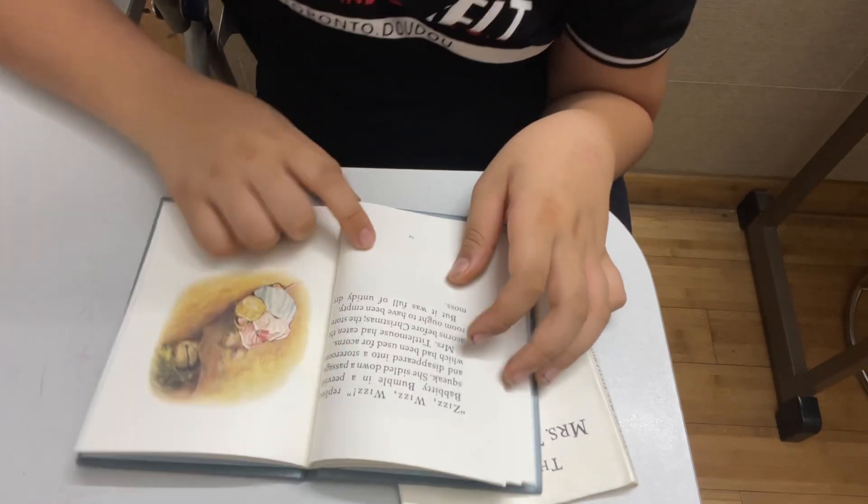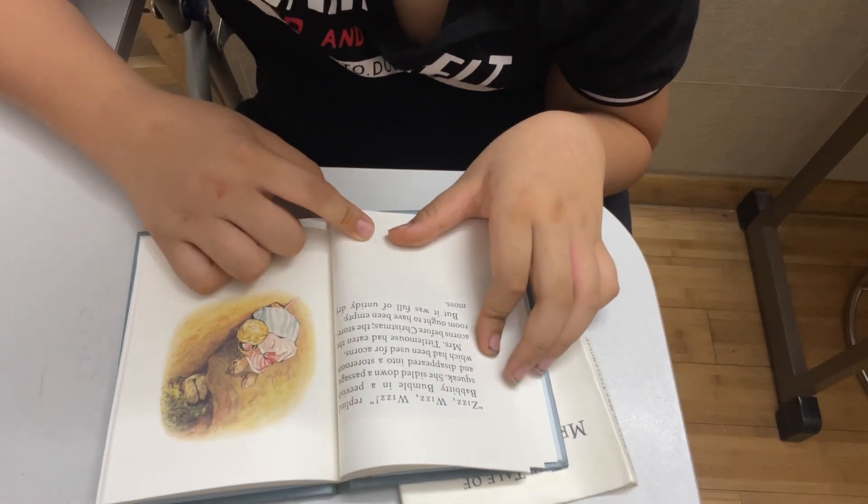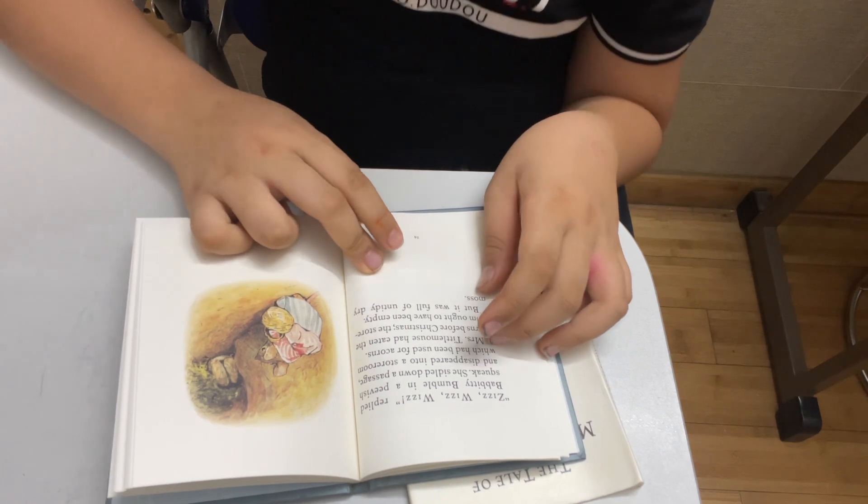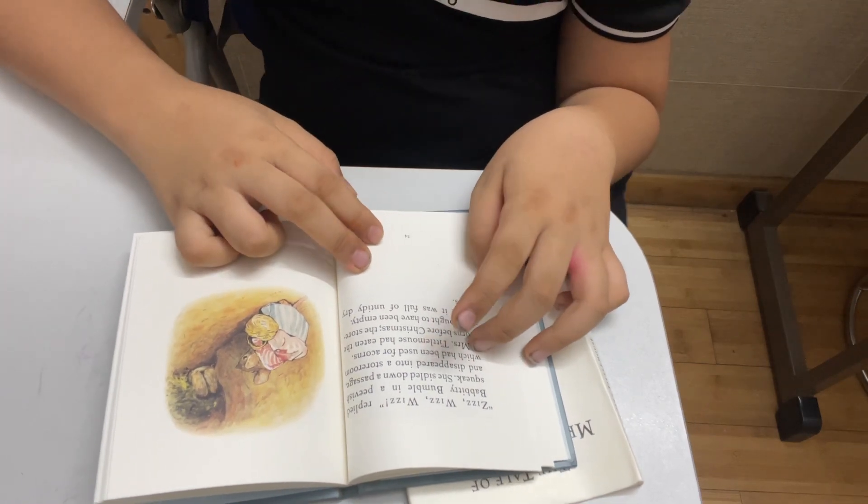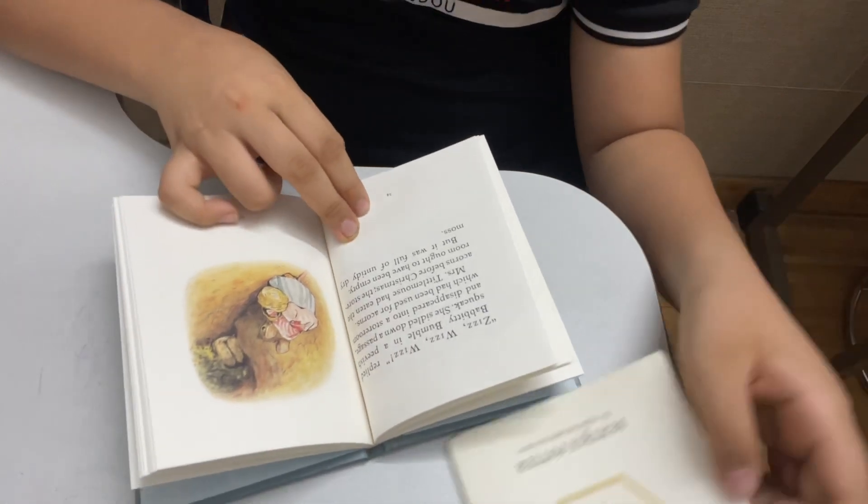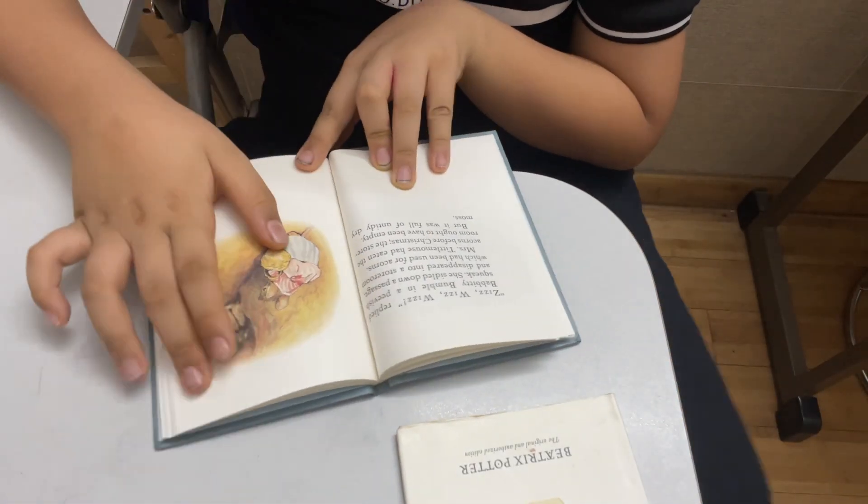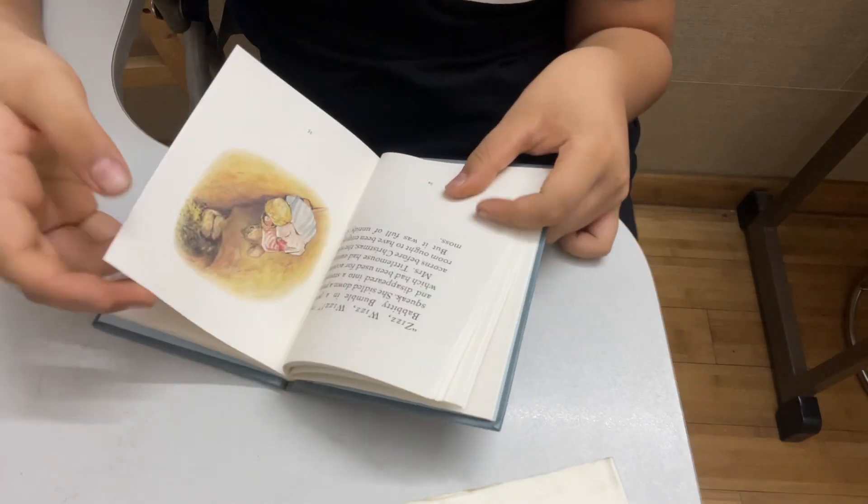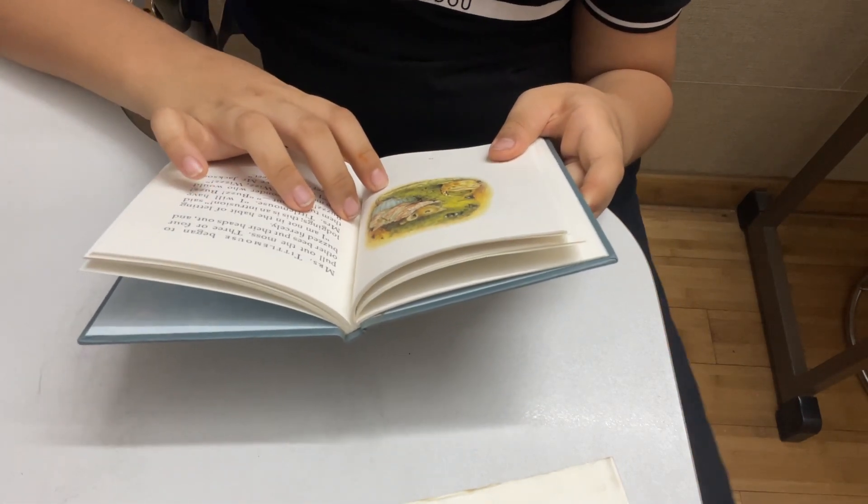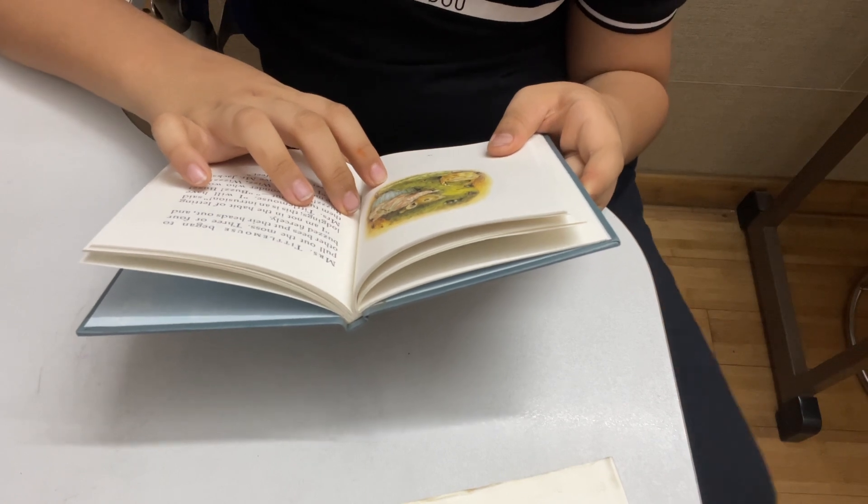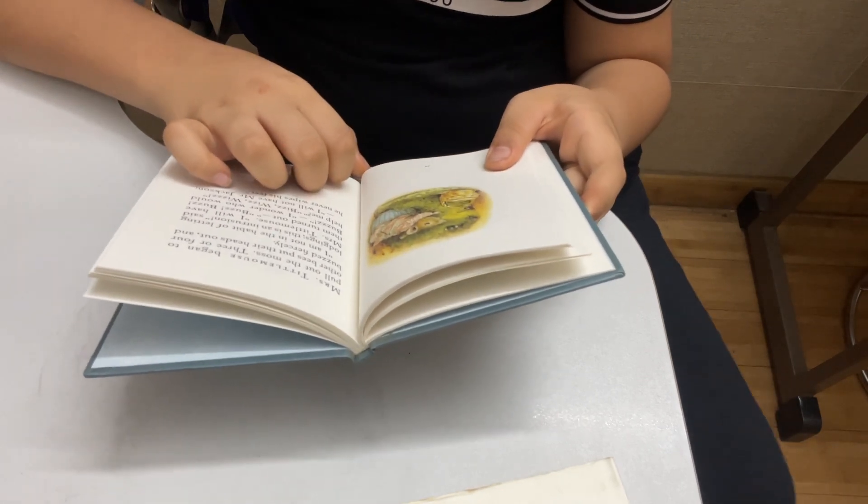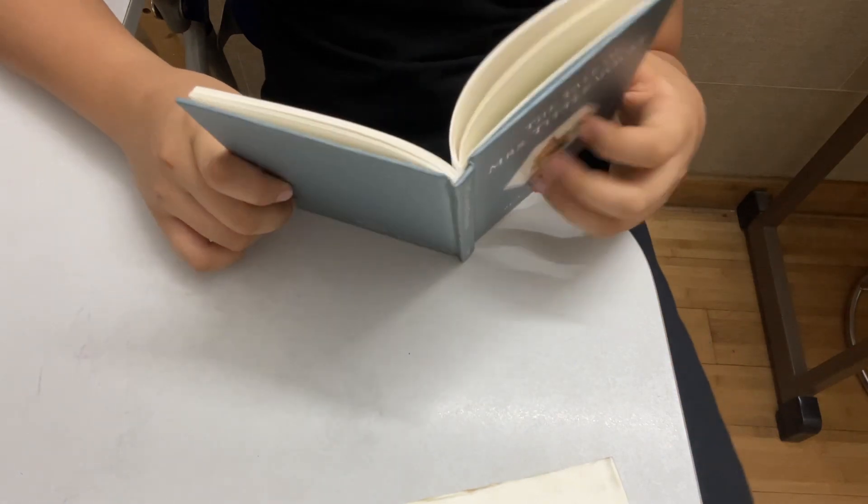Mrs. Tittlemouse began to get cross. Zizz, wizz, wizz, said Babbity Bumble in a peevish squeak. She sailed down the passage and disappeared into the storeroom, which had been used for storing acorns. Before Christmas, the storeroom ought to have been empty, but it was full of untidy dry moss. Mrs. Tittlemouse began to pull out the moss.